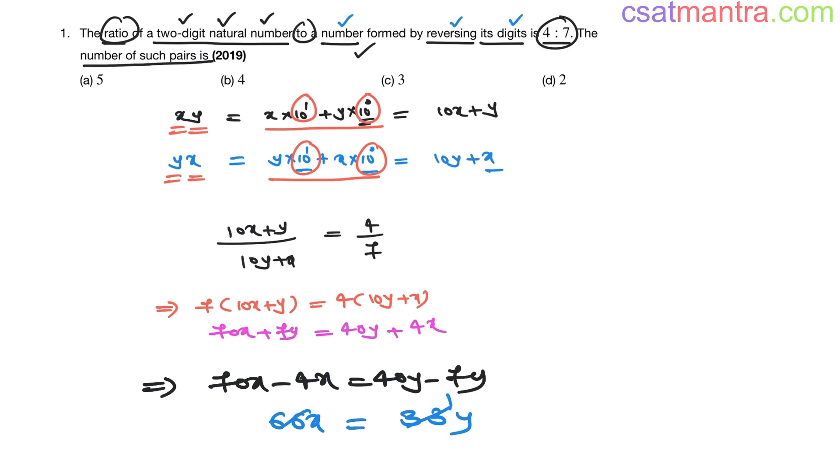33 ones are 33, twos are 66. So 2x is equal y. x by y is equal 1 by 2. I brought 2 this side and y this side. So x by y is equal 1 by 2.